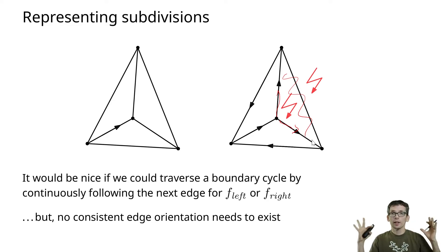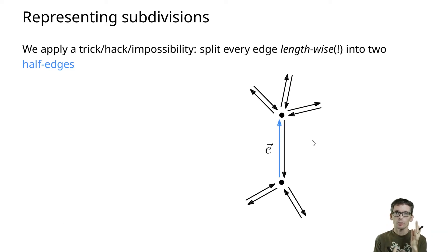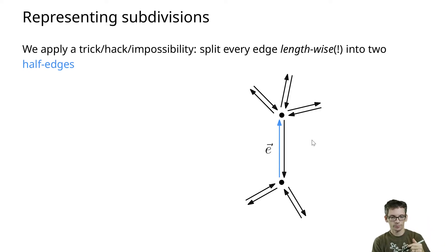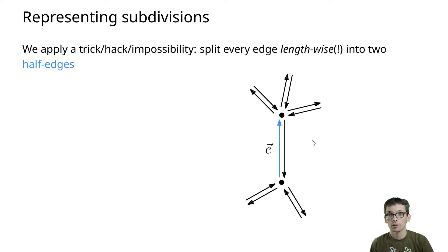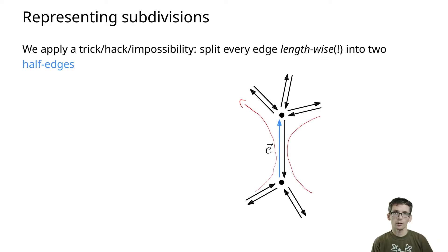Here comes a trick and a specialty of this data structure. It's called doubly connected edge list, and what we do is we don't have edges but half edges. Imagine you take an edge and split it in half along its direction. This allows us to get consistent orientations — I can walk around one face using one half edge and walk around the adjacent face using the other half edge.